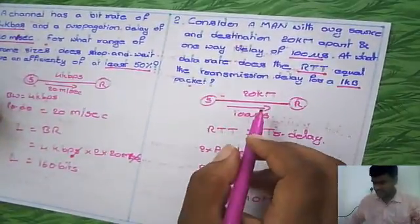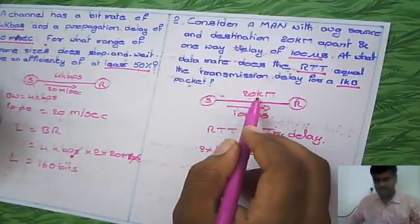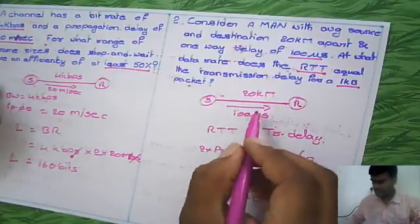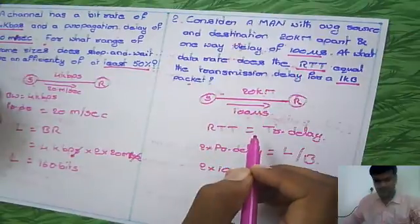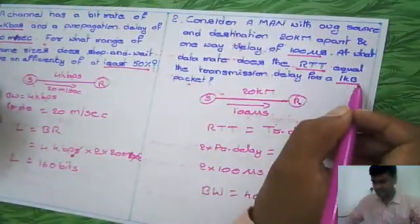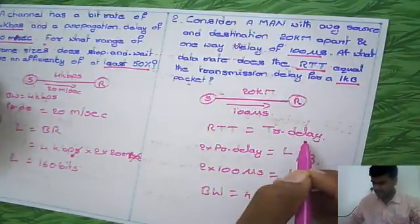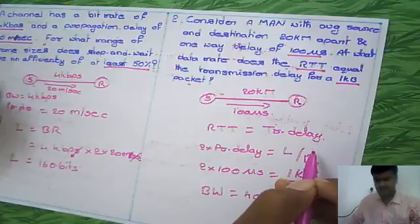This is the approach. If you observe, the length between the source and destination is not useful here. We use the one-way delay, which is the propagation delay, and the given packet size. The question asks, when this condition is satisfied, what is the bandwidth of the channel?